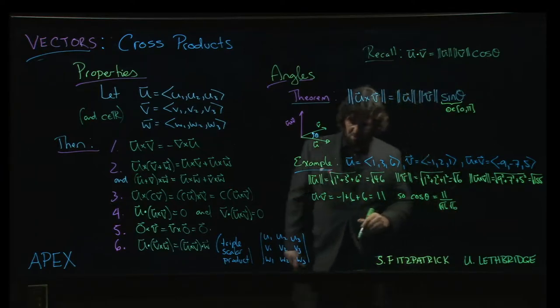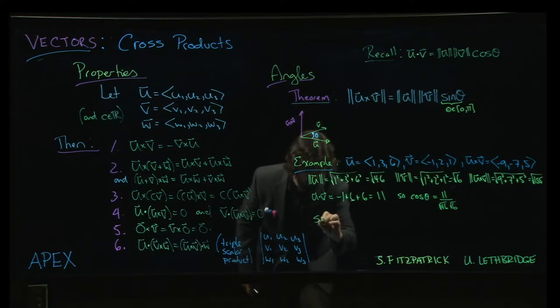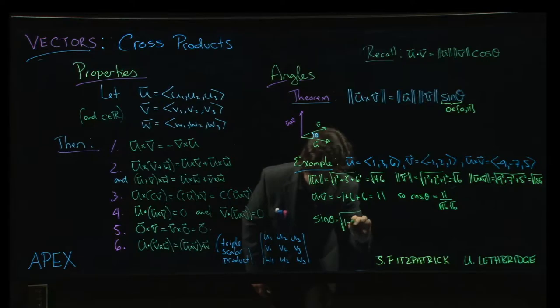So we know that cos theta will be 11 divided by root 46 times root 6. So sine theta will be the square root of 1 minus cos squared theta.